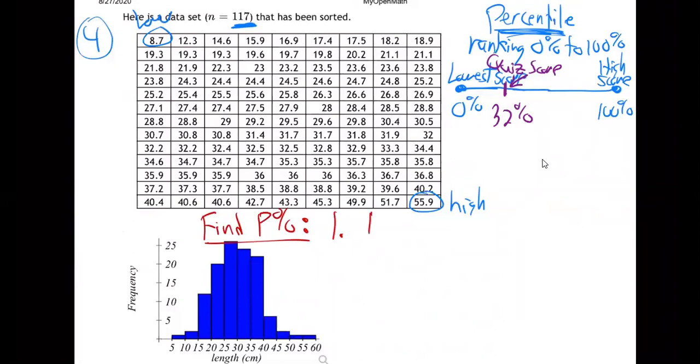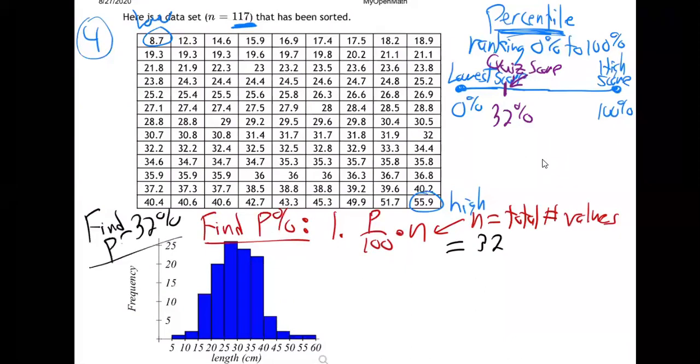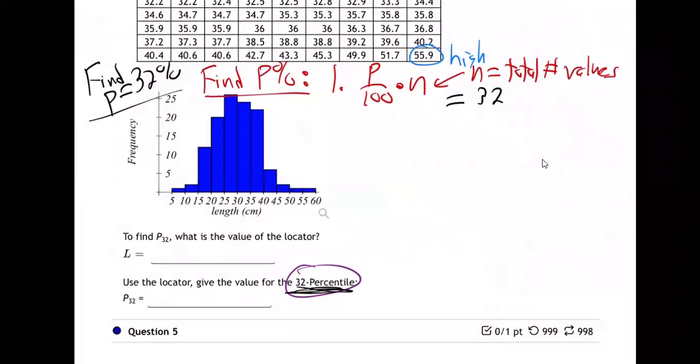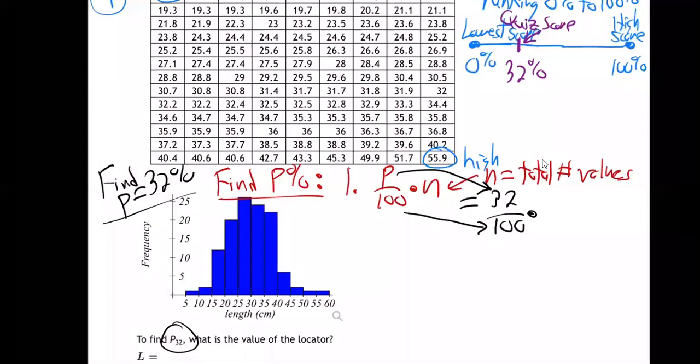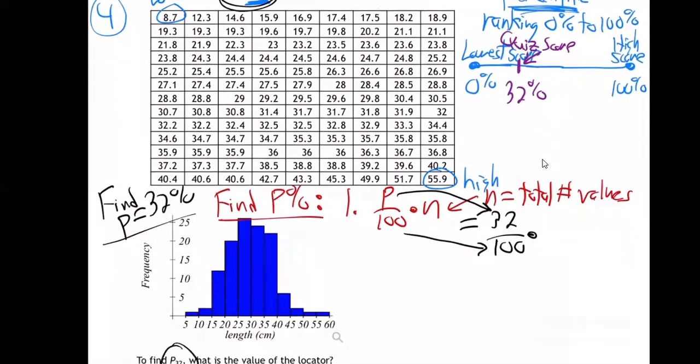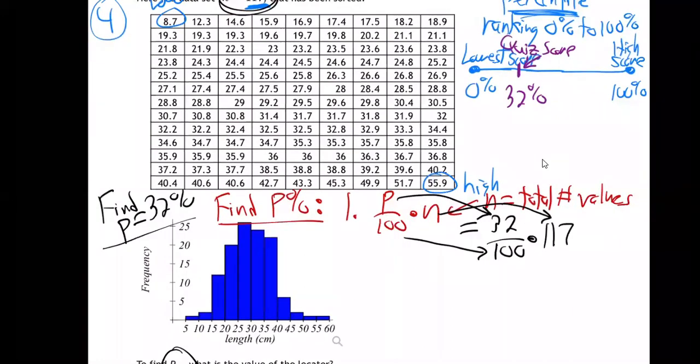What do you do? Step number one, take P over a hundred times n. n is the total number of values. So there's the first thing you do. P over a hundred times n. So in my case, the P is the 32. We're trying to find the 32%. So the P is 32. See it down here? They're saying 32nd percentile. P is 32. Or they even say it right there, don't they? P32. So I'm going to go 32 over a hundred times, right? I'm doing P over a hundred times n. What's n? Right there. 117 data values. So 32 divided by a hundred times 117. Use your calculator.